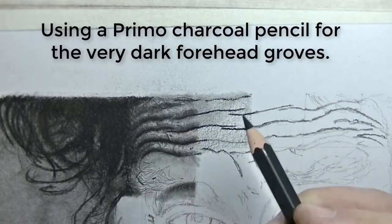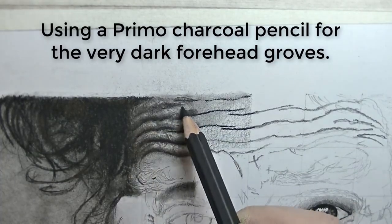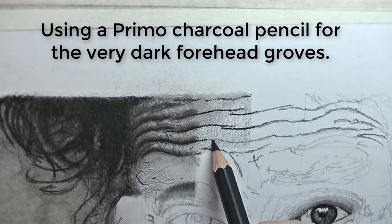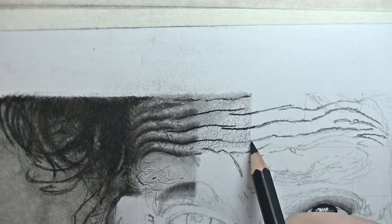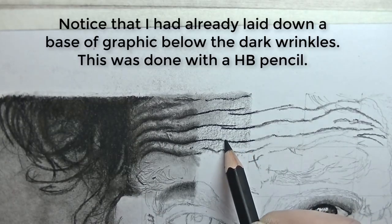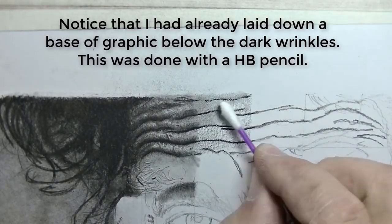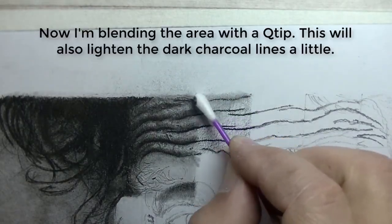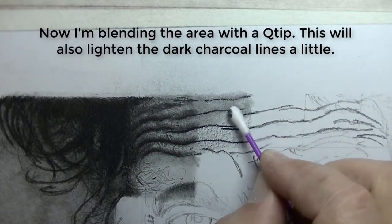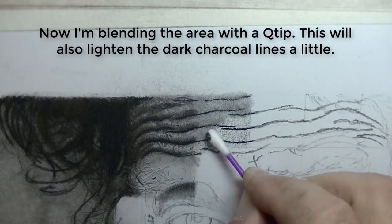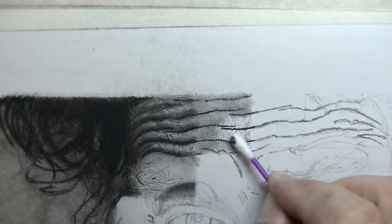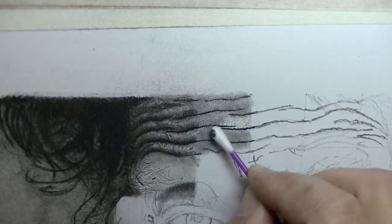To draw the illusion of a wrinkle, I'm going to start with a very dark pencil, like a charcoal pencil. I'm using a Primo here, and I'm going to darken in the grooves. Now, you see I've already laid down some HB graphite, which I am now blending with the Q-tip. And this is also going to lighten those dark lines as well.